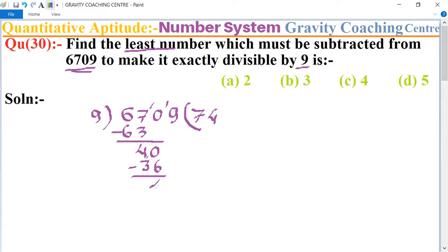Now remainder 4. Then 49. So 9 times 5 is 45. So the remainder is 4, which is the required least number.